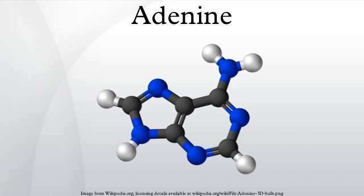Biosynthesis: Purine metabolism involves the formation of adenine and guanine. Both adenine and guanine are derived from the nucleotide inosine monophosphate, which is synthesized on a pre-existing ribose phosphate through a complex pathway using atoms from the amino acids glycine, glutamine, and aspartic acid, as well as the enzyme tetrahydrofolate.